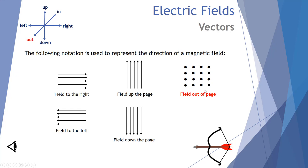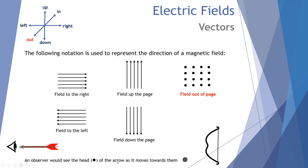Field lines coming out of the page are drawn as black dots. Imagine each dot as a wire or pencil coming out of the screen towards you. If an arrow were coming towards your eye, you'd see a dot getting bigger and bigger — that's why a dot represents an arrow coming towards you. Each dot represents a magnetic field line coming straight out of the screen at your face.